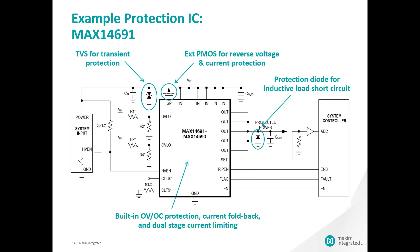At higher current levels, package power dissipation is a constraint. So the approach, similar to the Himalaya DC-DC buck regulators, is to move the PFET external to the device. This particular device, the MAX14691, is rated up to 6 amps. Beyond this difference, the feature set and functionality of the MAX14691 is identical to the MAX14571 discussed on the prior slide.